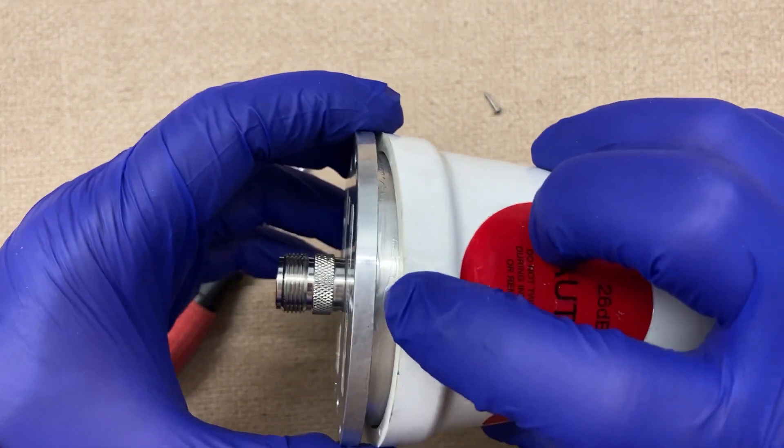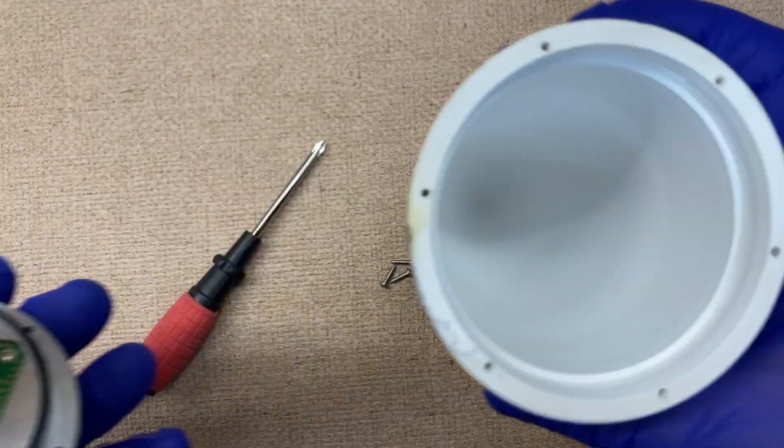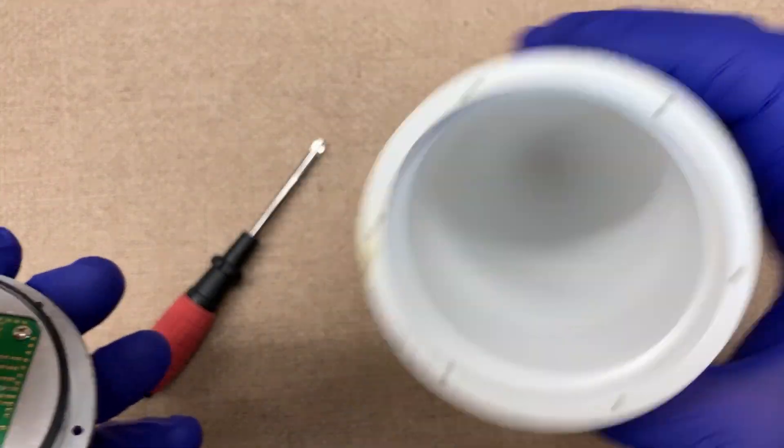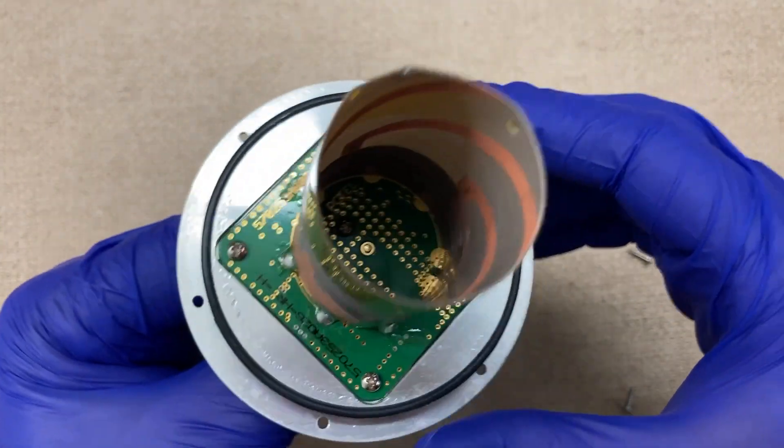But as you can see, you see this silicon type material. That's all that is, and here is the antenna.